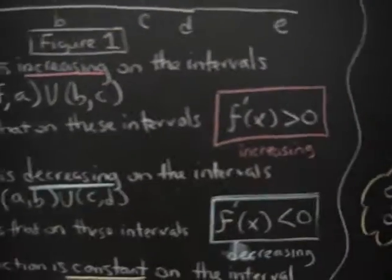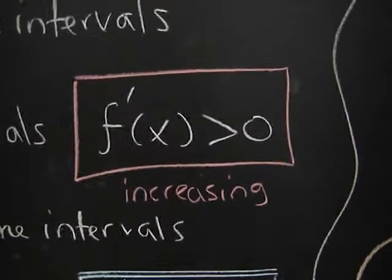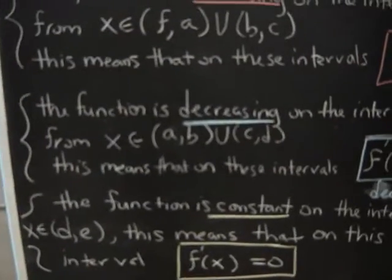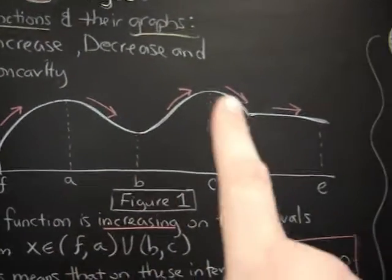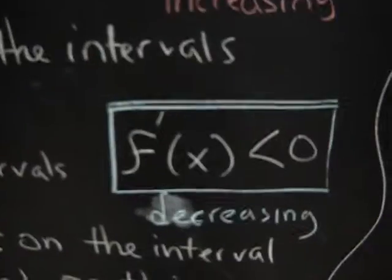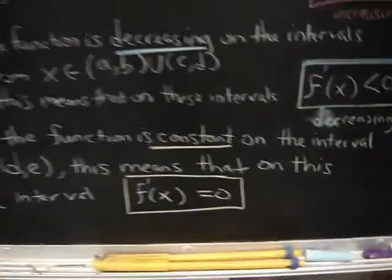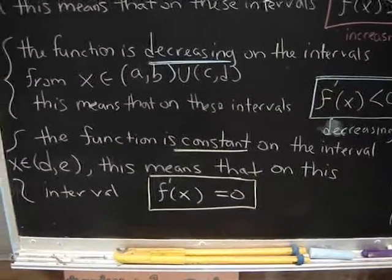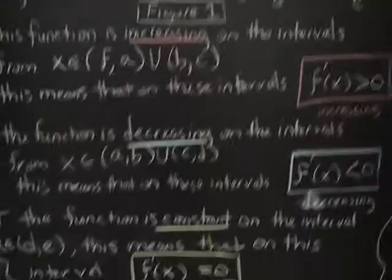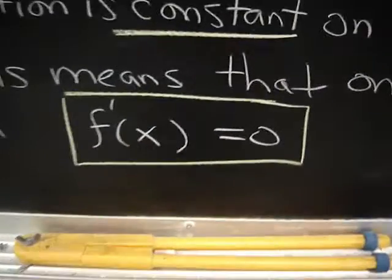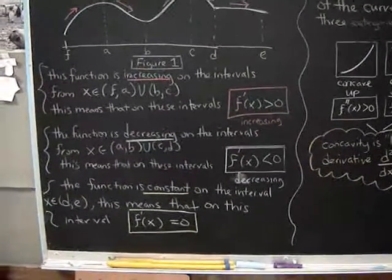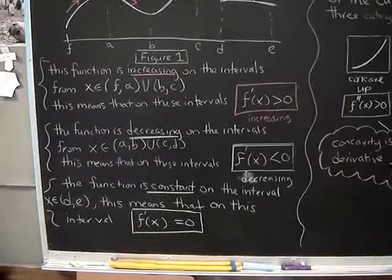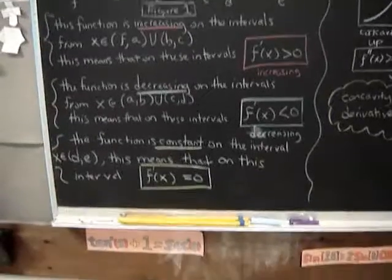This means that on those intervals, increasing means that the first derivative is greater than zero. The function is decreasing on the intervals from a to b, union c to d. Here's a to b, here's c to d, so it's decreasing. Ultimately, this means that the first derivative is less than zero on those intervals. Finally, the function is constant on the interval from d to e — it's completely flat — so f prime is zero on that interval. You have to know how to write intervals of increase and decrease and know the consequences for the first derivative: f' > 0 implies increasing, f' < 0 implies decreasing, and f' = 0 means constant.